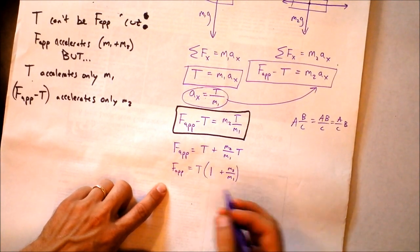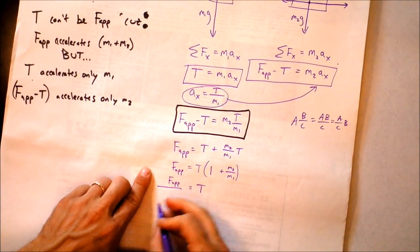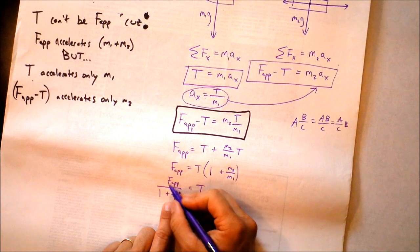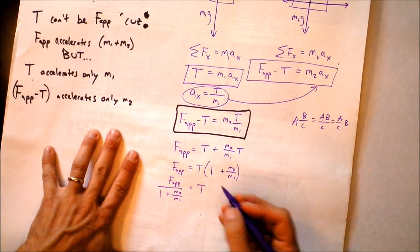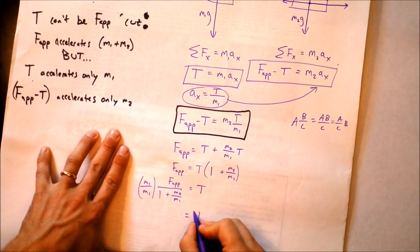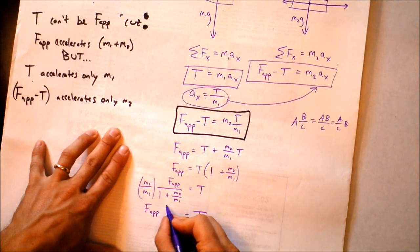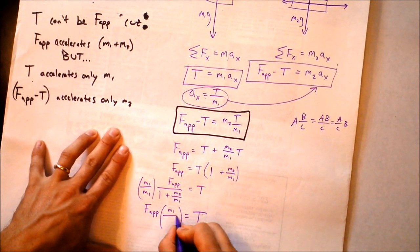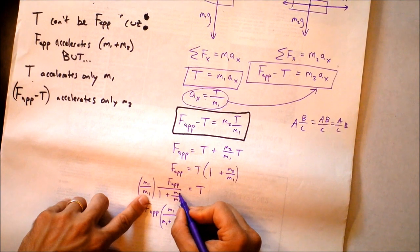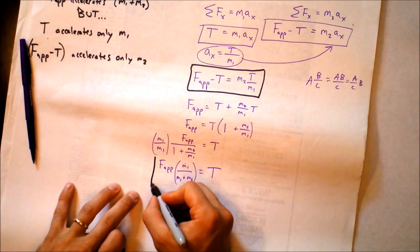Solving for tension: T = F_applied / (1 + M2/M1). To clean up the nested fraction, multiply numerator and denominator by M1: T = F_applied * M1 / (M1 + M2). That is our final answer.